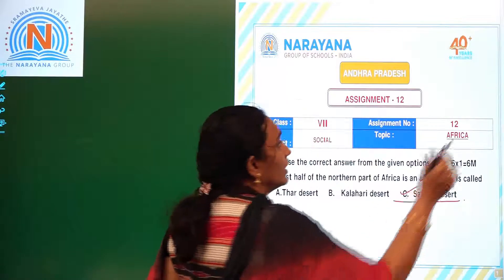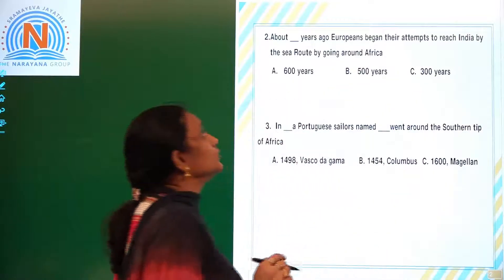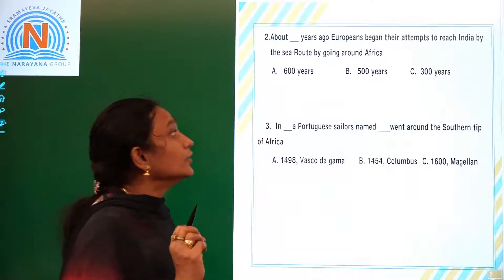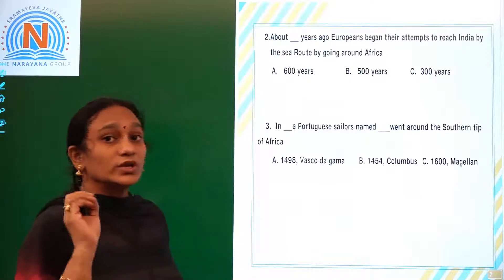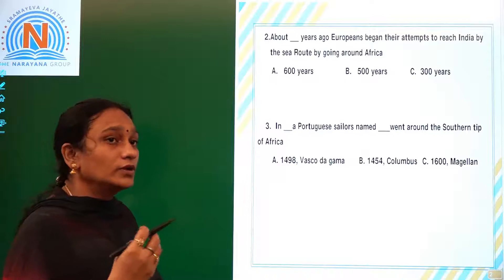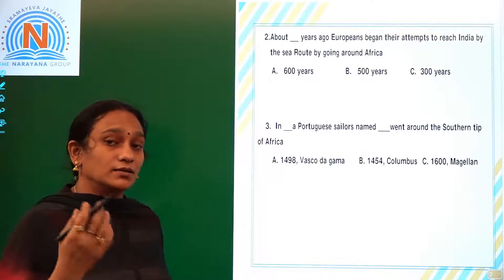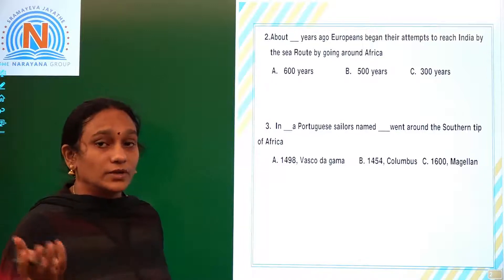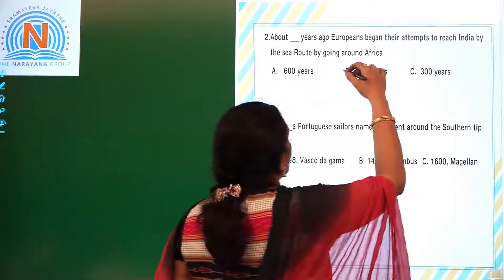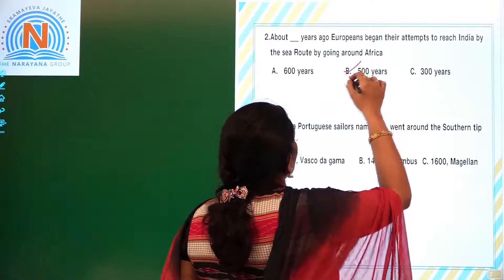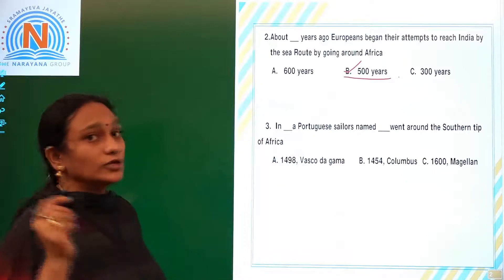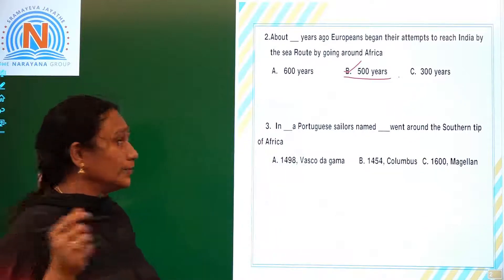About 500 years ago, Europeans began their attempts to reach India through the sea route. Many sailors started exploring many new things, and they found the sea route from Africa to India.